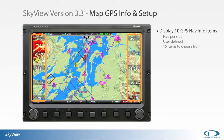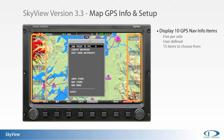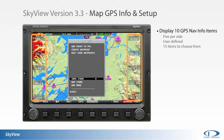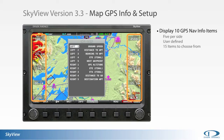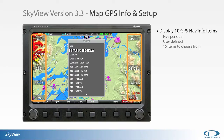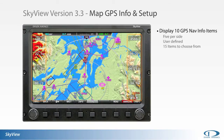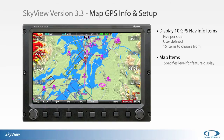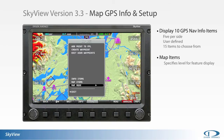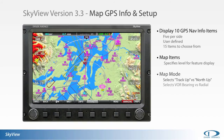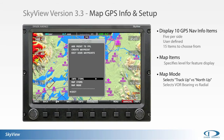Map preferences are now controllable from the map menu. The preferences menu allows adjustment of the map mode, map items, and info item settings. From the item settings menu, the user can select what info items are displayed on the right and left sides of the map page. Up to 15 different items are available for display in the five spaces on either side of the map window. The map items menu allows the user to specify at what zoom level various map features are displayed. The preference for north up versus track up can be selected in the map mode menu.